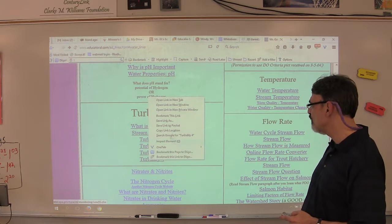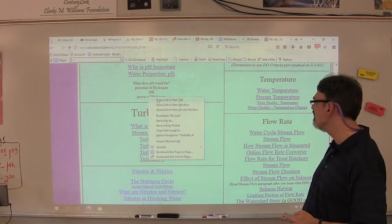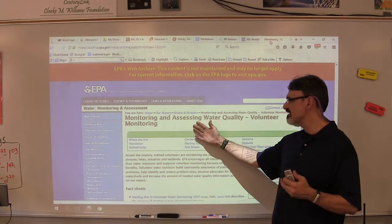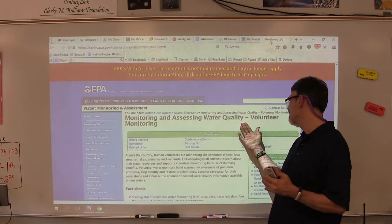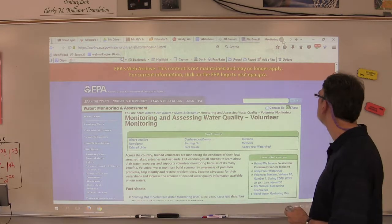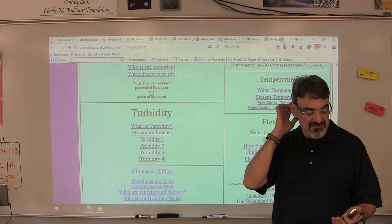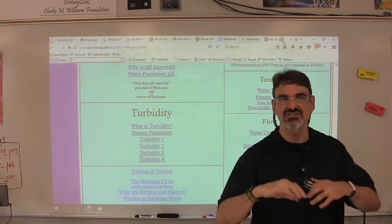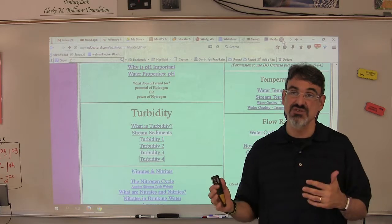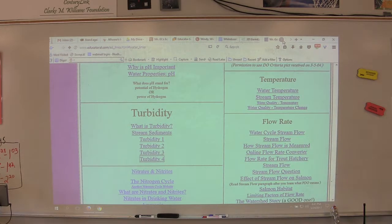And then turbidity number four, the last one on my list, tells you about the monitoring and assessing water quality. This one is just extra. If you don't get to it, no problem. It's all right. Well hopefully this will give you enough information to really teach turbidity and explain how Chimicum Creek is doing with our turbidity, turbidity levels.